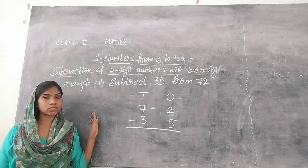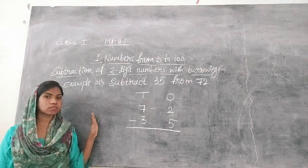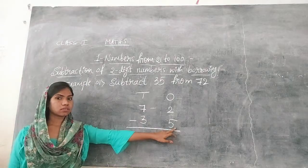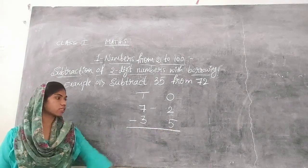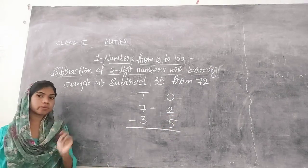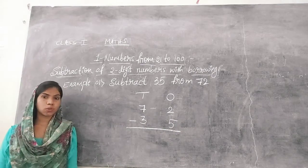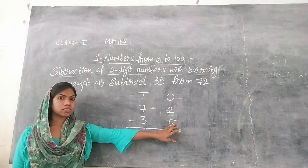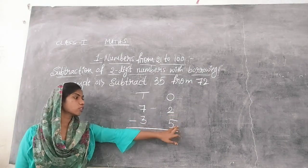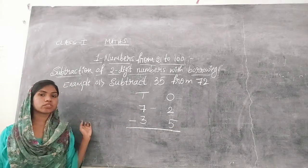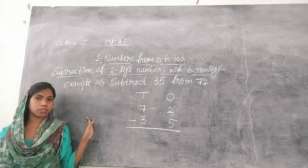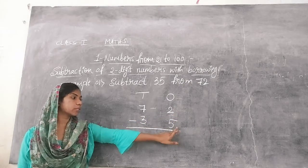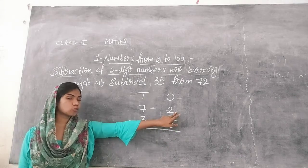As we know, subtraction always starts from the right side, or starts from the ones place. So here we have 2 minus 5. Is it possible to subtract 5 from 2? No, it is not possible to subtract 5 from 2, because 5 is bigger than 2. It is not possible to subtract a bigger number from a smaller number. So we have to make this 2 bigger than 5.